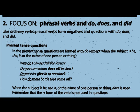In the present tense, questions are formed with do, except when the subject is he, she, or it, or the name of one person or thing. This is normal for verbs, just like we do in ordinary verbs. The first one: why do I always fall for losers? You can see that this is in the present tense.